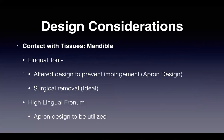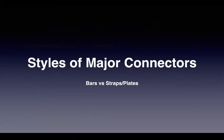Regarding lingual tori, the ideal approach is surgical removal. If that is not an option, a design that accommodates the lingual tori should be used — most likely an apron design, especially in cases with a high lingual frenum. The apron design works best for relieving areas where tori are present and for managing path of insertion challenges.